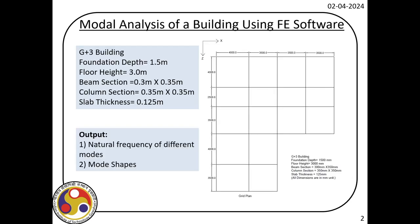What we are going to do is model a G plus 3 building. You can see the plan view — this is a frame structure starting from the foundation level. The depth of the foundation is 1.5 meter, meaning from the top of the foundation to the plinth level it is 1.5 meter, and from there we have a floor height of 3 meter. We purposefully selected an asymmetric plan building.